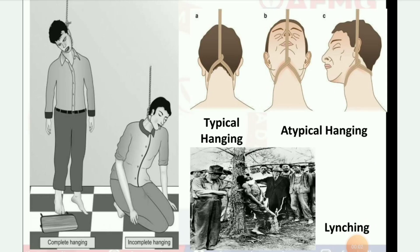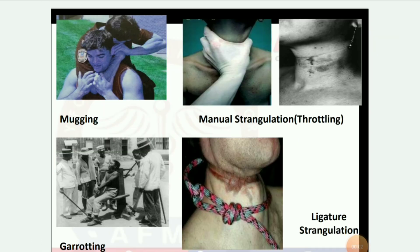Next image is hanging: complete hanging, incomplete hanging, typical hanging, atypical hanging, and lynching. Next image: mugging — manual strangulation, throttling, garroting, and ligature strangulation.